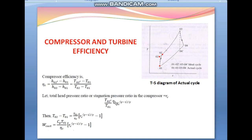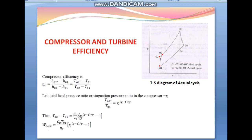Because of the total pressure ratio or stagnation pressure ratio of the compressor, assuming R_C, we have T2 dash / T1 = R_C to the power (γ−1)/γ. This is because the line 1–2 dash is the isentropic process, and we calculate the pressure ratio for this work. From this equation, we can write: T2 − T1 = (T1 / η_C) × [R_C^((γ−1)/γ) − 1]. This relation comes from the compressor efficiency equation.